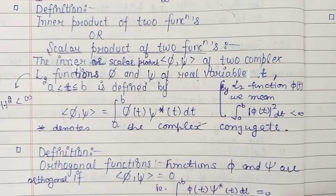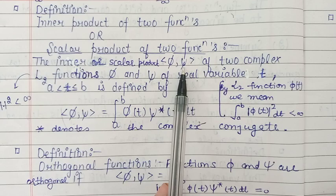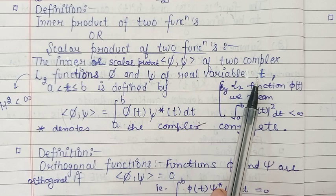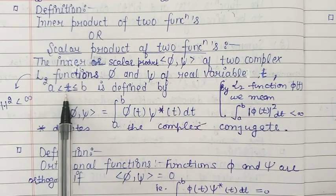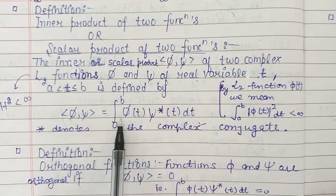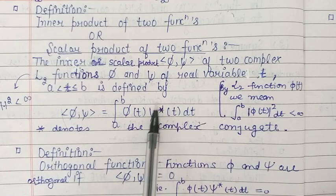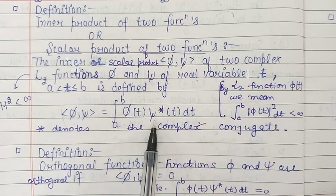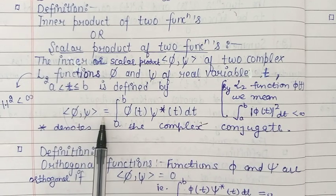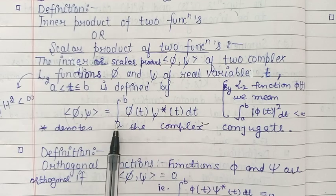Now we define the inner product of two functions phi and chi, which are complex square integrable functions of the real variable t, where t belongs to the closed interval [a, b]. The inner product of phi and chi is defined by the integral from a to b of phi(t) times chi*(t) dt, where the star denotes the complex conjugate of chi.